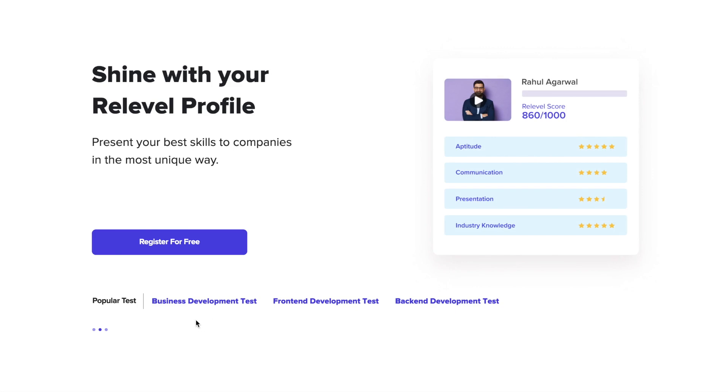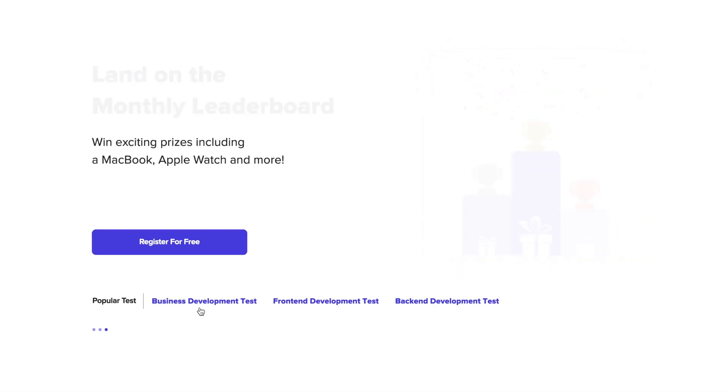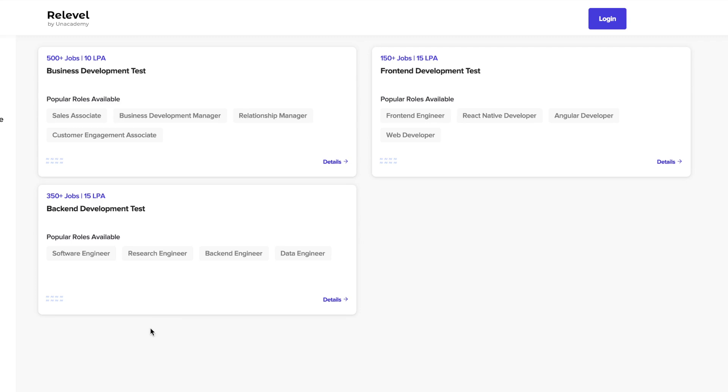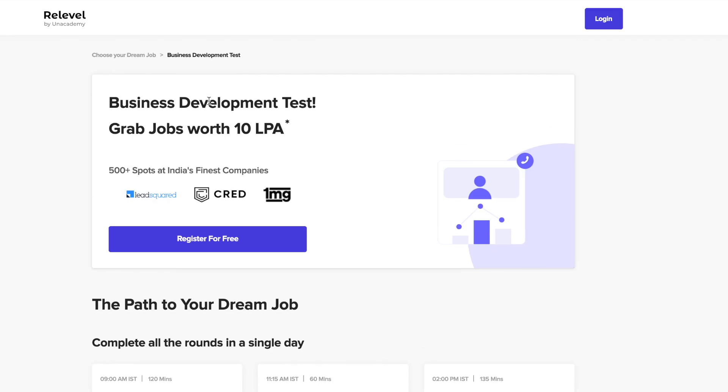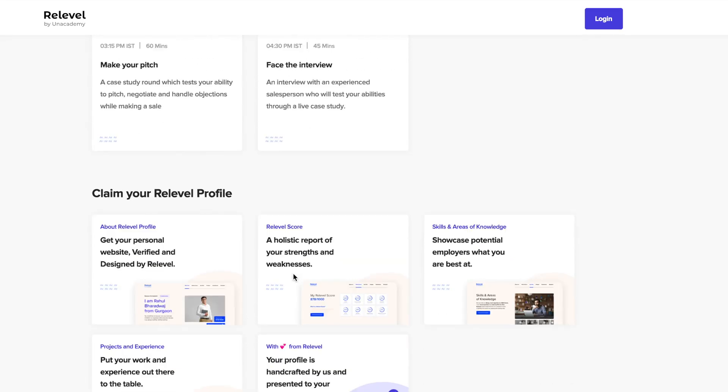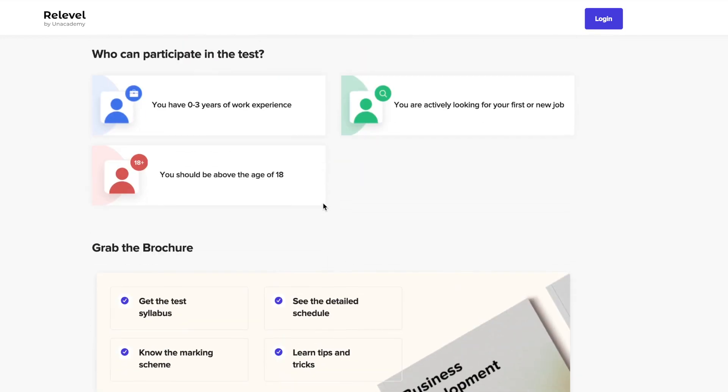So how to register? You have to go to the link given in the description. You have to select the test of your choice. There are various tests available like backend, frontend, and business development associates. You can book these slots after registering and you have to create a neat and good resume and submit it. So what are you waiting for? Register for the ReLevel test today.